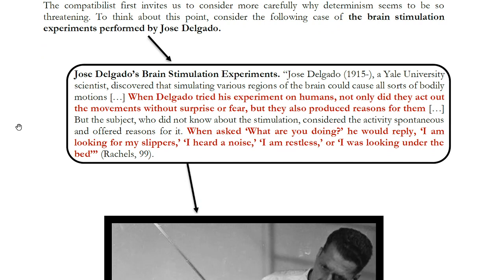To get at what makes determinism seem scary, I want to look at an example of brain stimulation experiments done by the scientist Jose Delgado. Delgado did experiments on the human brain where he stimulated the brains of his patients and it caused them to perform certain actions — they might look around the room or raise their hand. So he could stimulate the brain and cause them to do various things.